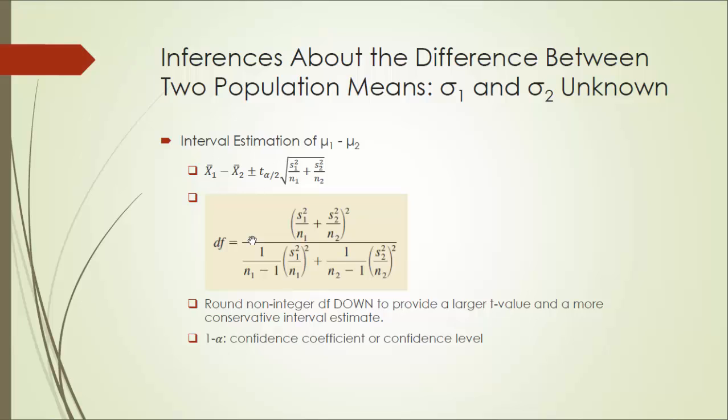On most t distribution tables, you don't see a decimal as a degree of freedom. As a result, it's recommended that we round non-integer degree of freedom down to provide a larger t value and a more conservative interval estimate. And alpha is our old friend significance level, and one minus alpha is nothing but our confidence level.